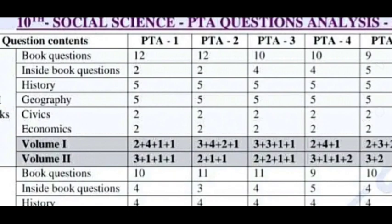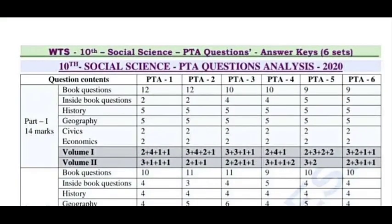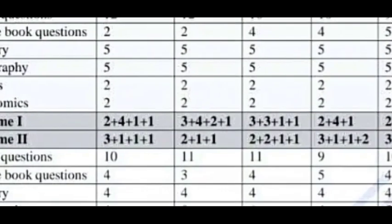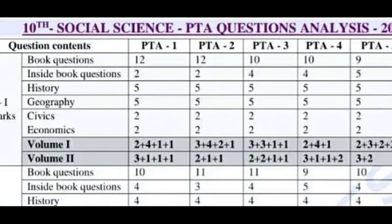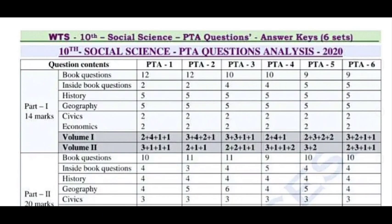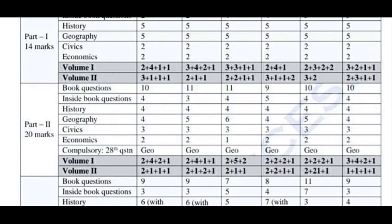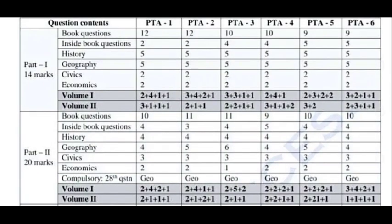Volume 1 Geography (Jogar Field) has 4 questions. Volume 2 Geography has 1 question. PTA 1 and PTA 2 follow this pattern. In Civics and Economics, both Volume 1 and Volume 2 are covered. Now we will analyze this. If you look at this pattern, you will have a good chance of scoring. Let's check this pattern. Next, you will see Part 2.